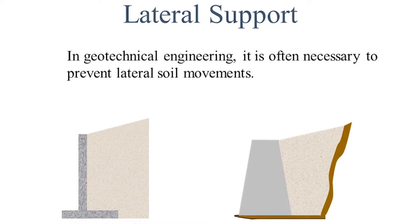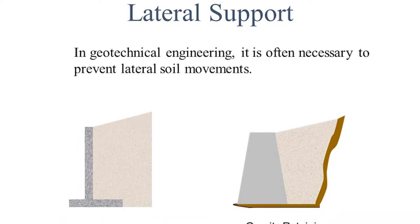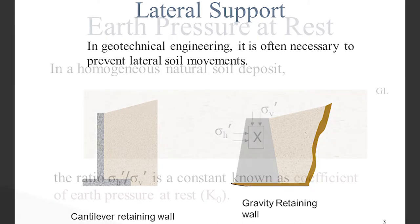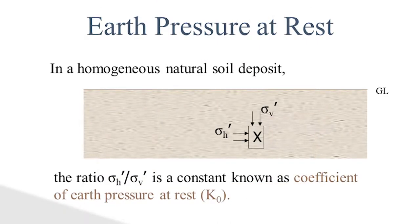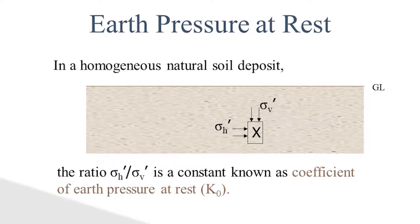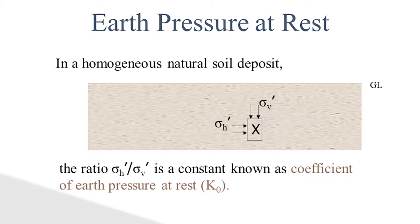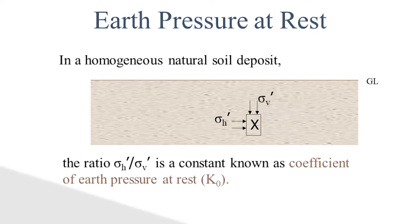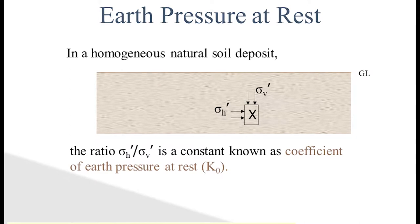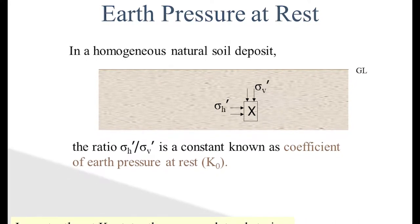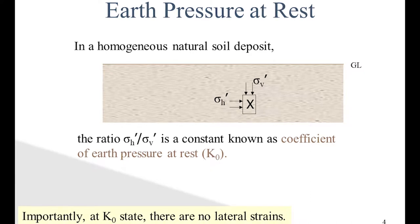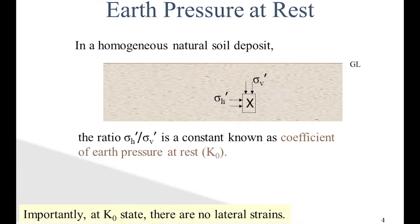In geotechnical engineering, it is often necessary to prevent lateral soil movements — that is, we need to give some lateral support. For earth pressure at rest, in a homogeneous natural soil deposit, sigma V dash is the effective vertical stress and sigma H is the horizontal effective stress on the soil element. The ratio of sigma H dash to sigma V dash is a constant known as the coefficient of earth pressure at rest. In the K0 state, there are no lateral strains, meaning there is no movement of the element.